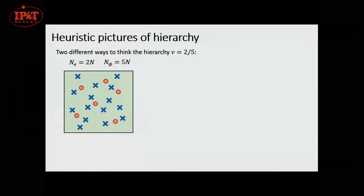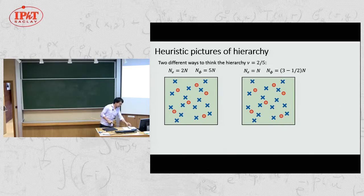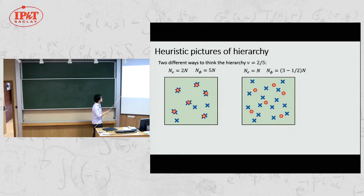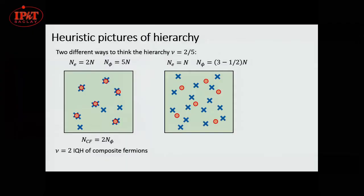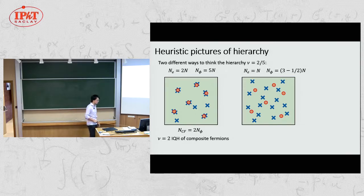Now proceeding to two-fifths: imagine the 2D electron gas with five flux quanta per two electrons. Attaching two flux quanta to each electron, the composite objects have filling fraction two, so they can fill two Landau levels — the integer quantum Hall state. For the composite boson picture, attaching three flux quanta to electrons, you don't have enough flux quanta per electron. The remaining quasi-electrons from the one-third Laughlin state form bosonic quasi-particles and can condense.